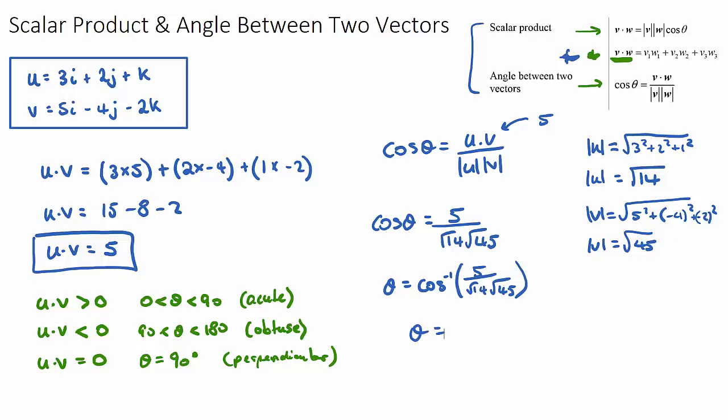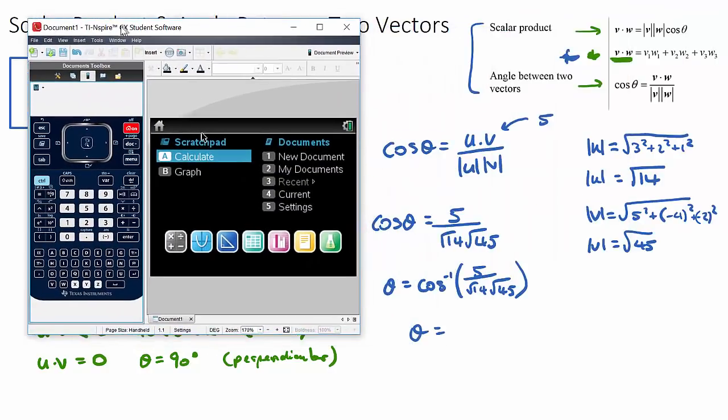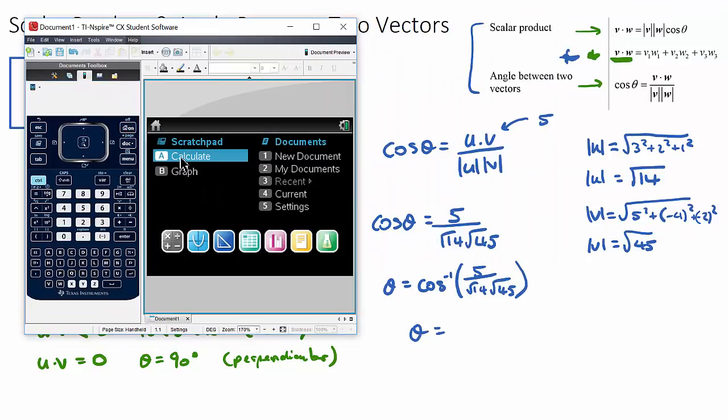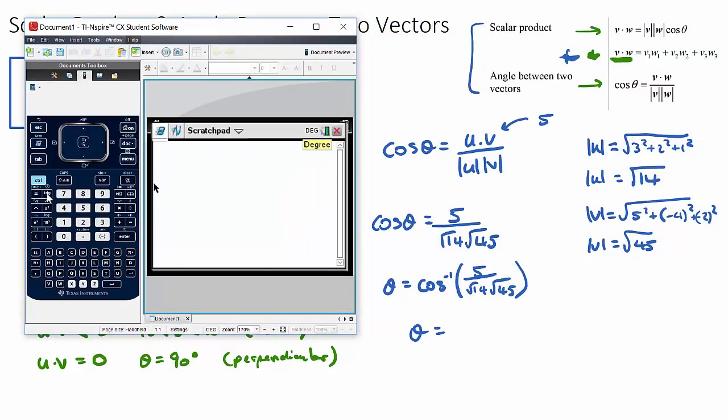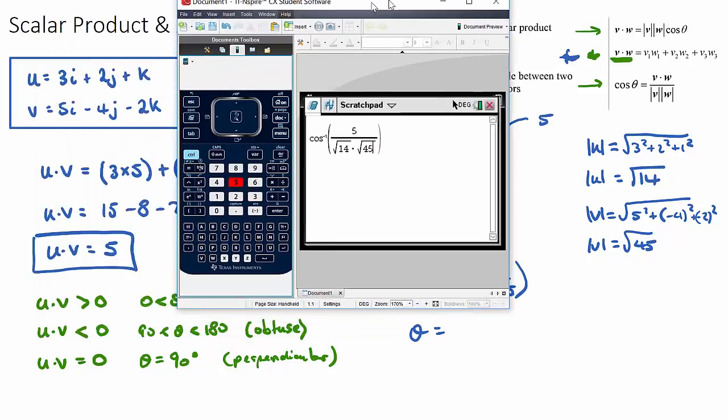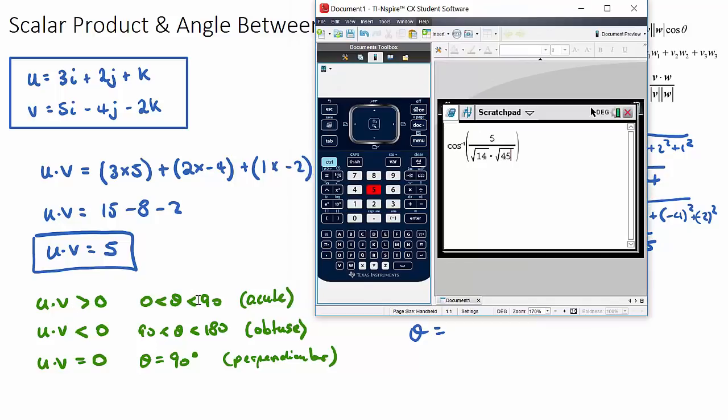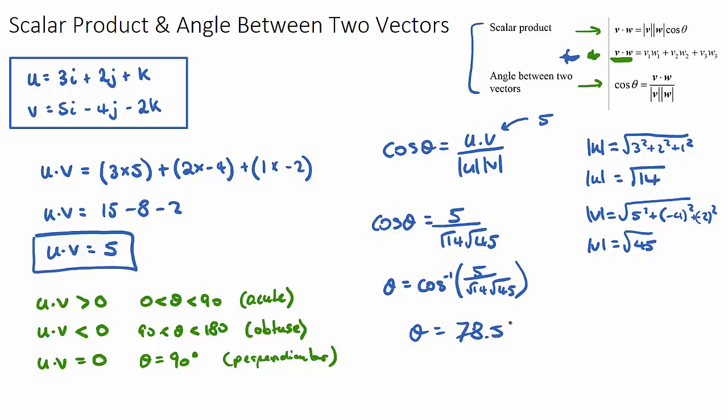We can do that on our calculator. Let's get our calculator out. If we want to find theta in degrees, make sure we are in degrees mode. So we can just go cos to the negative one, five over root 14 multiply by root 45. Now, before I press enter and get my answer, we know that because our scalar product was a positive answer, we're going to get an acute angle between our vectors. So this answer should be between 0 and 90 degrees. And it is 78.5 degrees.